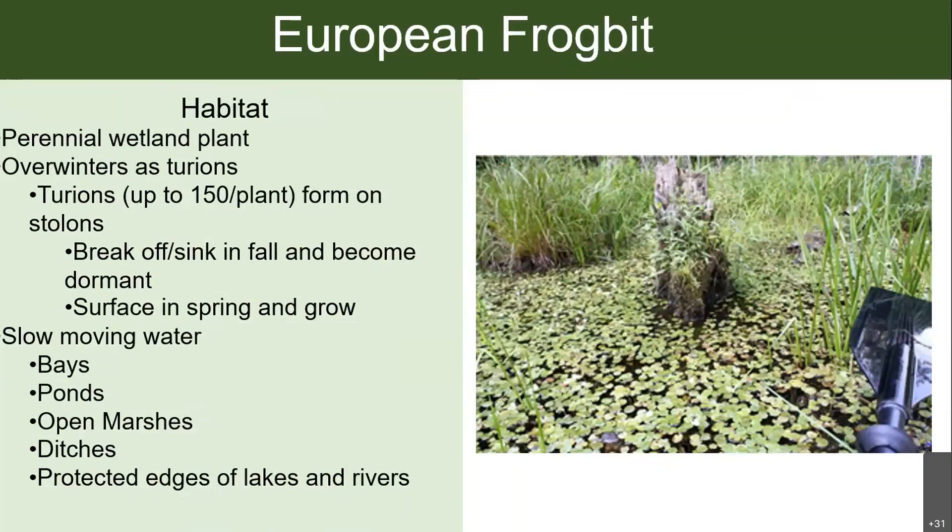Frogbit prefers slow moving water, typically in areas up to two and a half feet deep, but since it's free floating it doesn't necessarily need to be in water that shallow — that's just where you're more likely to find it. Habitat types include bays, ponds, open marshes, ditches, protected coves of lakes and rivers, and even wetlands with very little water. There are a few populations in the lower Hudson region where frogbit has actually formed on floating wetland mats, so it's not even fully submersed in the water.